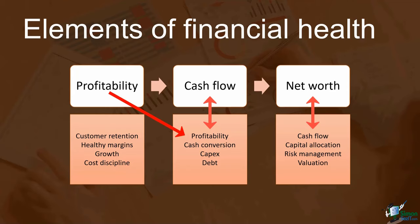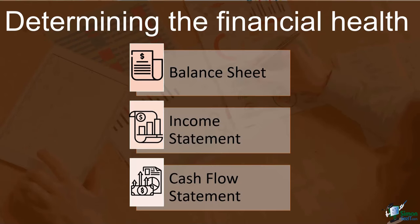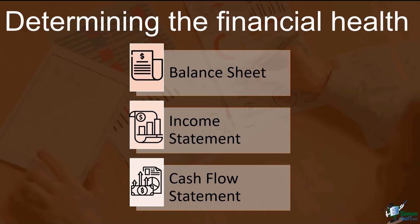This is where financial forecasting can help. It will help you think seriously and strategically about what needs to happen in each of these areas of the company in order to be successful. To determine the financial health of a company, you need to analyze the balance sheet, income statement, and the cash flow statement. The balance sheet is a statement that shows a company's financial position at a specific point in time, providing a snapshot of the company's assets, liabilities, and owner's equity.